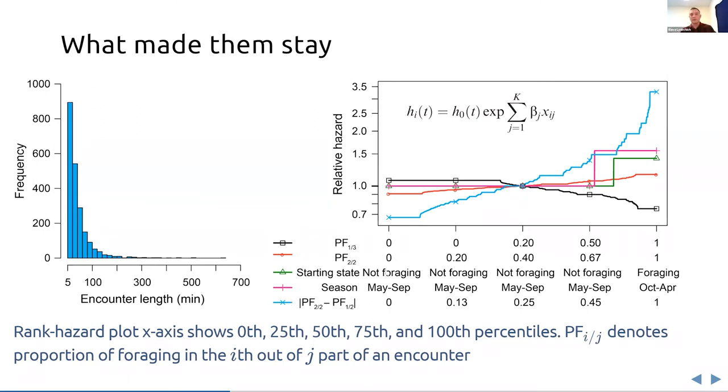And these are the corresponding percentiles of all these covariates. Relative hazard of 1, which corresponds here to median level of all covariates, means that there is no effect on the length of the encounter.